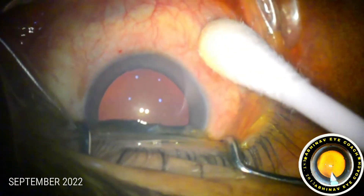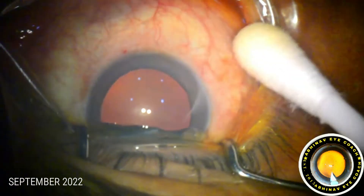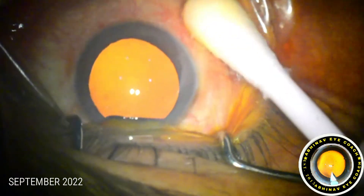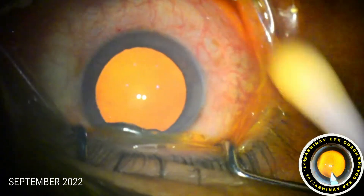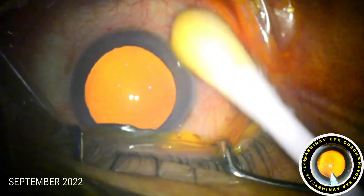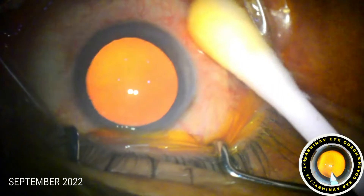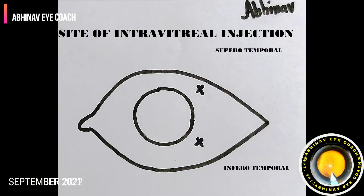The eye is draped, topical antibiotic and anesthetic eyedrops are instilled inside the eye. The site of intravitreal injection is supero-temporal or infero-temporal to the limbus. We have to measure the distance from the limbus before giving the injection.